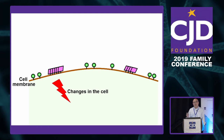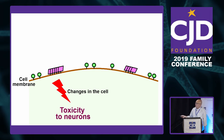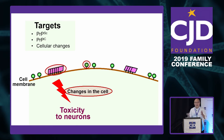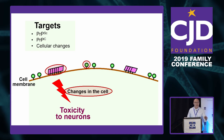If we talk about developing therapies, we want to find a good target. Here we have three good targets. The first is obviously PRP Scrapie — this is the disease-specific form; if we can remove it, that would be great. The second is PRPC — if we can prevent it from interacting with the abnormal form, we can prevent the disease. The third is the change within the cell — if we can stop the cellular process, we can stop the neurotoxicity. A lot of work has been done on all three targets previously.